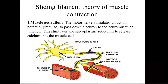The nerve associated with conducting this message is known as the motor neuron. Together, the muscle plus the motor neurons form a motor unit. The motor nerve stimulates an action potential to pass down the neuron to the neuromuscular junction, which then stimulates the sarcoplasmic reticulum.